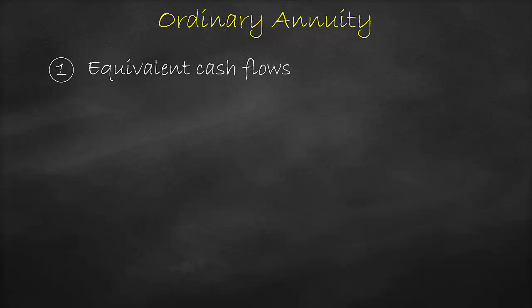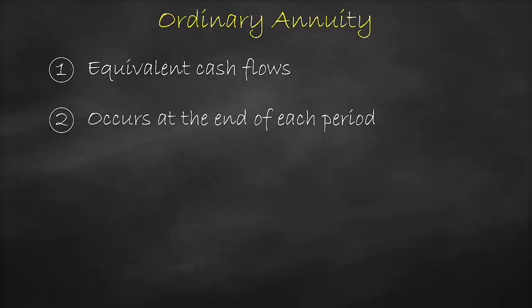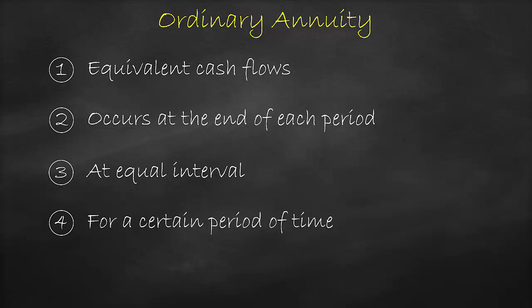Our next formula will be the ordinary annuity formula. We have four main characteristics of an ordinary annuity. Firstly, we have equivalent cash flows, which means the same amount. Secondly, we receive or pay this cash flow at the end of each period, such as at the end of every year. Thirdly, we receive or pay this cash flow at equal intervals, such as every year. Lastly, we receive or pay this cash flow for a certain period of time, such as three years.